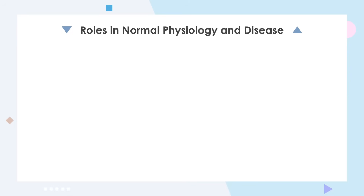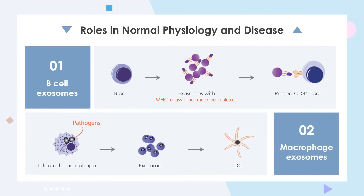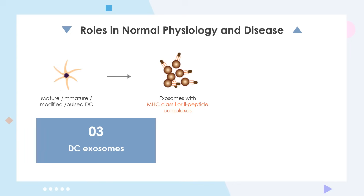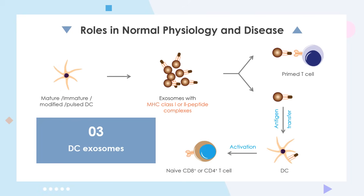In this figure, exosomes from immune cells and their different known activities are clearly depicted. First, cells secrete exosomes carrying MHC class II peptide complexes as a means of antigen presentation to primed CD4+ T cells. Second, pathogen-infected macrophages secrete exosomes with antigens; these exosomes induce the maturation of DCs and promote the secretion of pro-inflammatory cytokines. Third, DC-derived exosomes carry MHC class I or class II peptide complexes, which can be directly recognized by pre-activated CD4+ or CD8+ T cells, or captured and presented by dendritic cells to activate naive T cells.